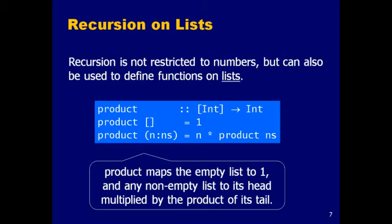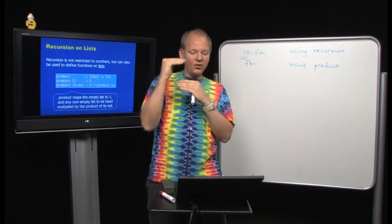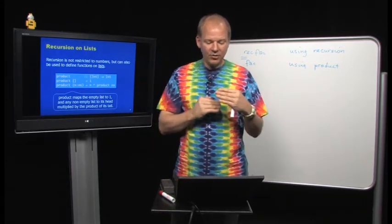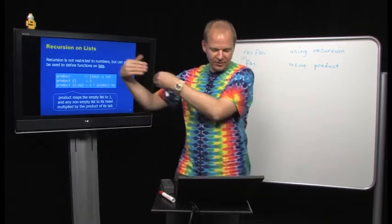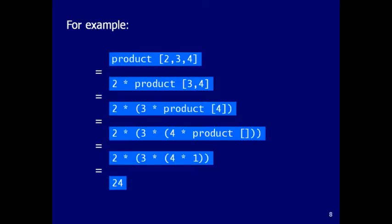Here's another example: product. Product of the empty list is 1. Product of a list n concatenated with n's is n times the product of n's. I'm defining this function by induction over the list. I give all the cases on the left-hand side — empty or a list of n on top of n's — and on the right-hand side I'm calling the function on the remainder of the list. I just unfold the definitions at each point. That's the way you reason about pure functional programs.